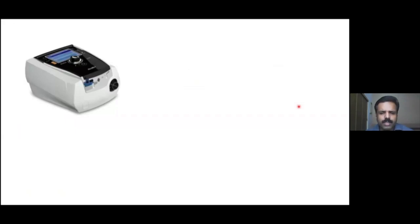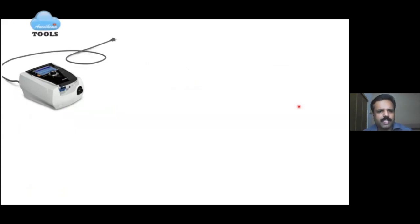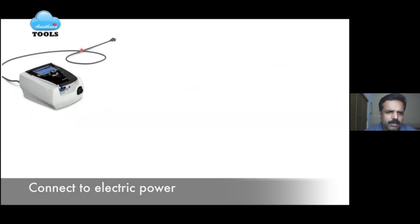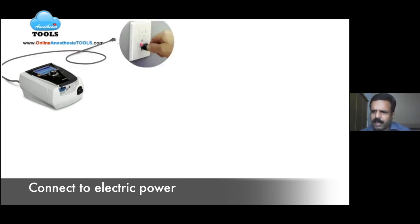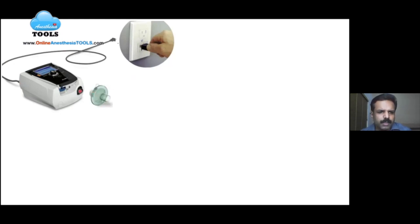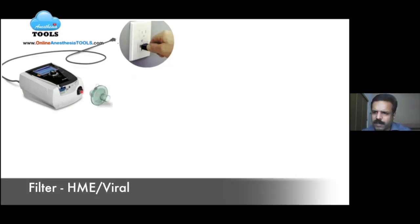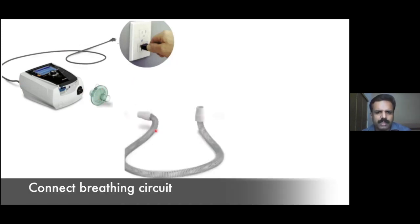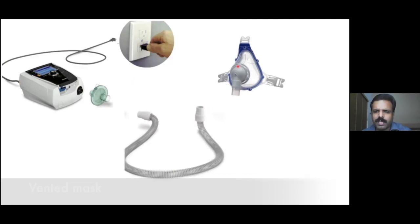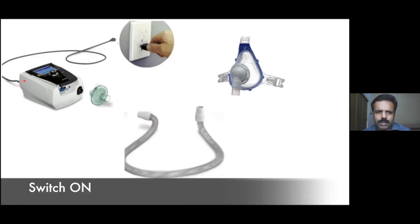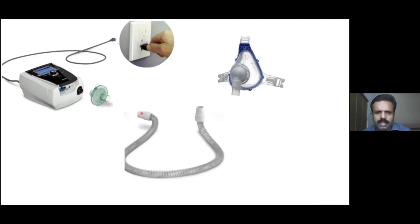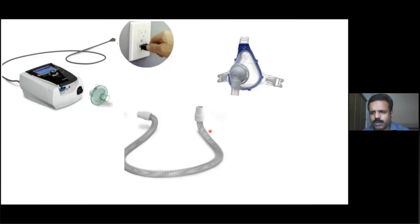To start the ventilator: first, connect the ventilator circuit to the plug. You can optionally place an HME filter or viral filter, then connect the circuit followed by a vented mask. After connecting the circuit to the back of the machine, switch it on and make your adjustments. Always use a sterile circuit — there are reusable circuits, but they must be ETO sterilized.